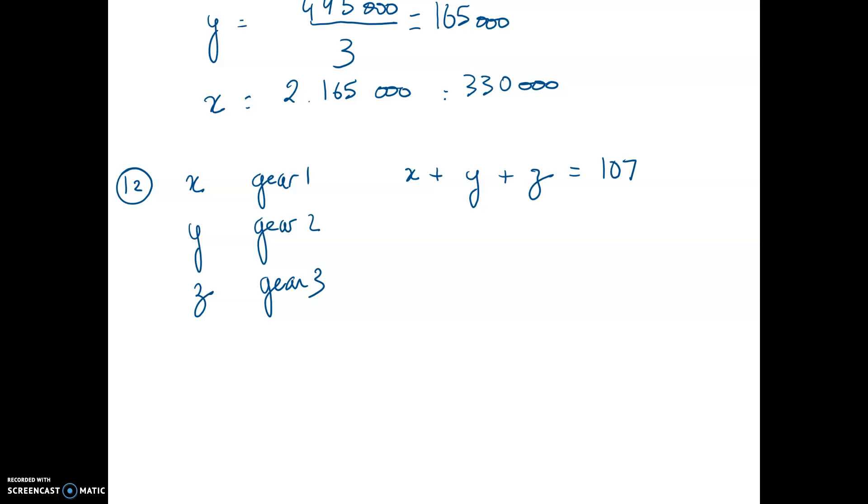So how do we find the second equation? They are telling you that the second gear, which is Y, has 13 more teeth than the first one. So Y equals X plus 13. But they are also telling you that the gear number 3, Z, has 15 more teeth than Y. So it's Y plus 15.